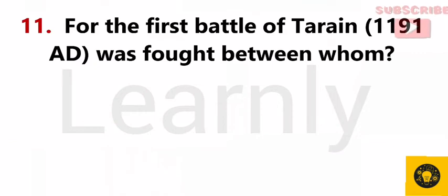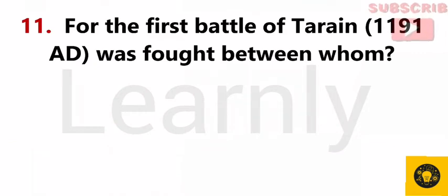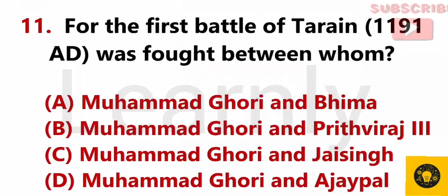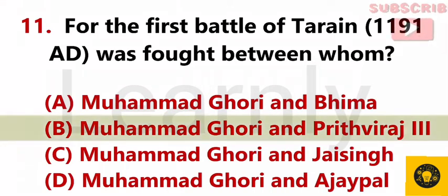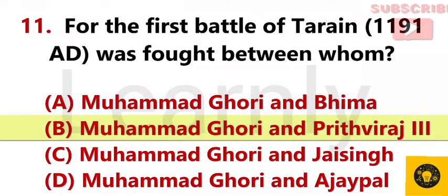The first battle of Tarain in 1191 A.D. was fought between whom? Answer B. Muhammad Gori and Prithviraj III.